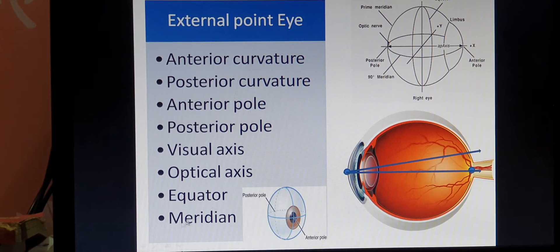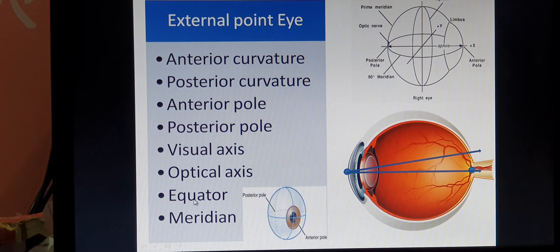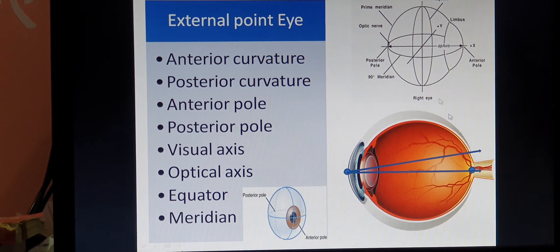There are two more terms: equator and meridian. The equator is a circular line around the eyeball drawn equidistant from the anterior pole and the posterior pole — at the midpoint between the two poles. The meridian is also a circular line, but it passes from the anterior pole to the posterior pole, running circularly at right angles to the equator.